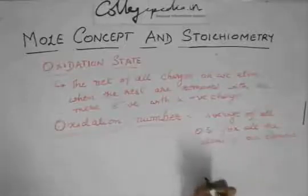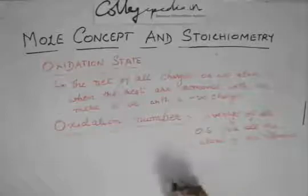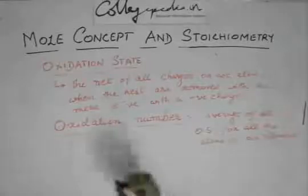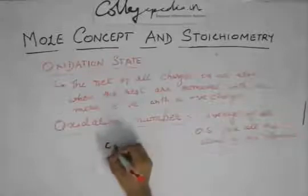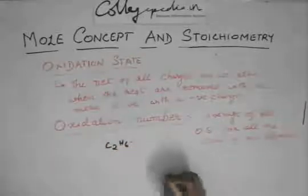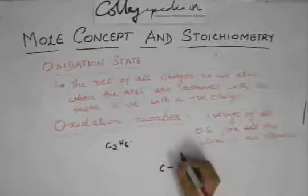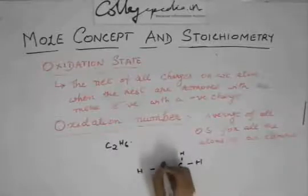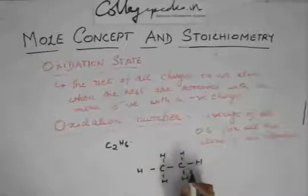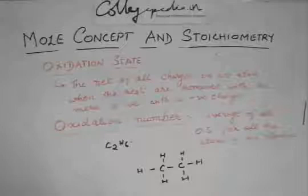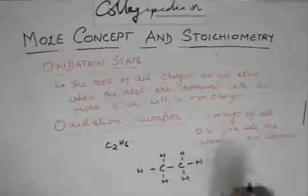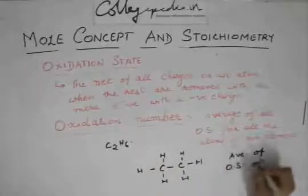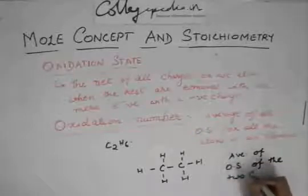Oxidation number accounts for the fact that there can be more than one, or a repetition of the same atom in the compound. For example, suppose you have C2H6. Here, if you want to find the oxidation number of carbon, then you have to find the average of oxidation states of the two carbon atoms.